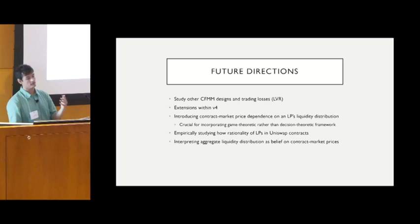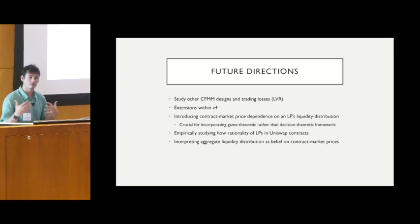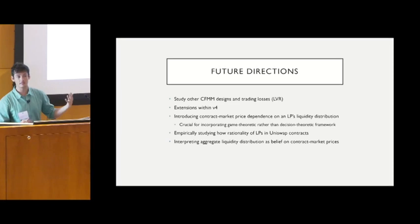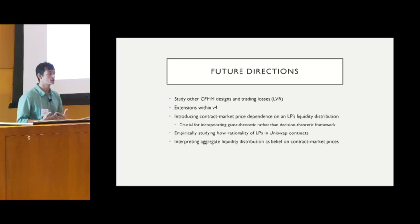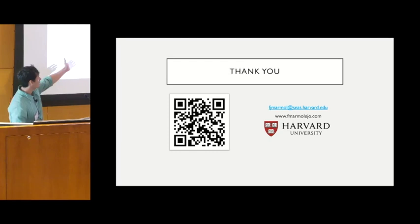To conclude on future directions: this is a preliminary study looking only at Uniswap V3. Main directions include examining other CFMM designs, other trading losses such as impermanent loss and LVR, and extending to V4 with hooks, which provides a richer action space. Introducing dependence on the distribution is also crucial to incorporate game theory and competition among liquidity providers — everything here is decision-theoretic. Finally, these techniques could enable an empirical study of LP rationality: given a prior over beliefs and observed allocations, we could derive a posterior over beliefs and interpret aggregate liquidity distributions.